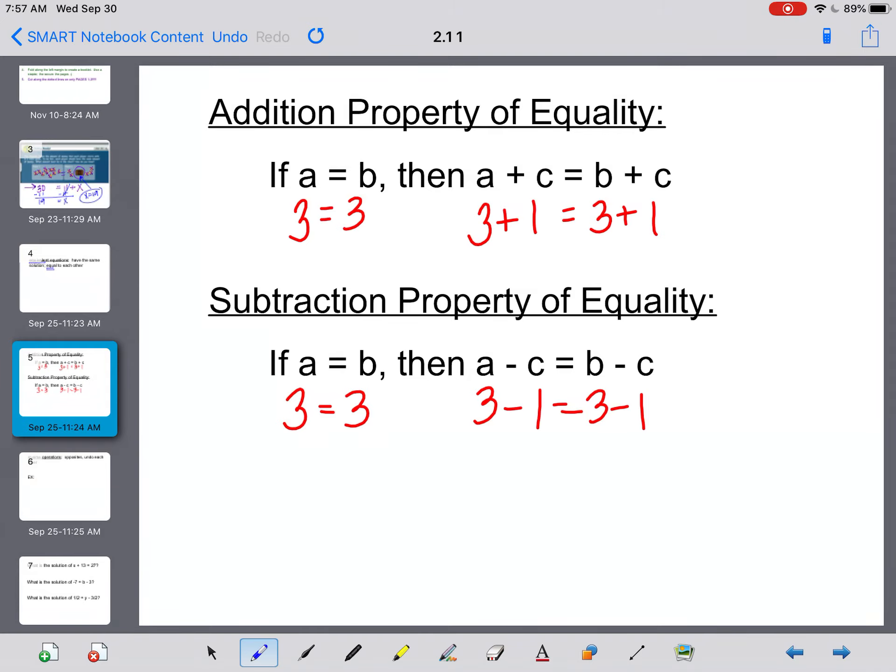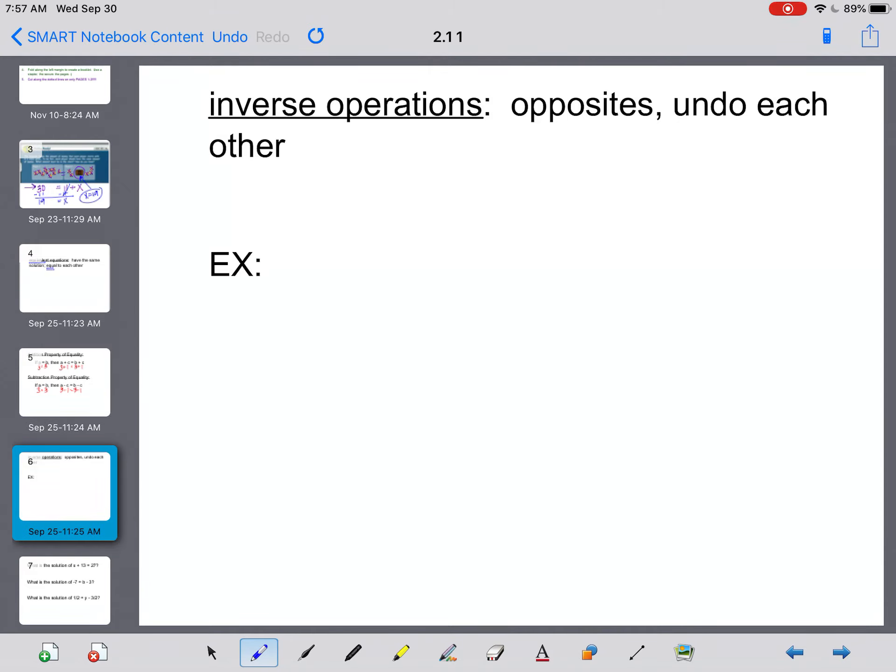A couple properties of equalities here. The addition property of equality says that if A and B are the same, and when I add them to C, I'll get the same answer. If A is 3 and B is 3, when I add it to 1, it's going to be the same on both sides. Subtraction property is the same thing, only this time I would be subtracting. If A and B are the same, and if I subtract C away from them, I will still get the same answer.